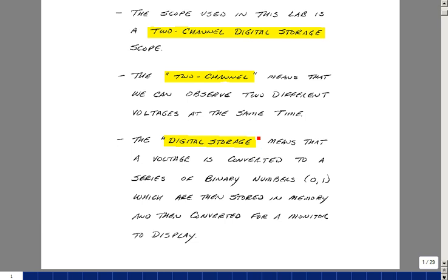Digital storage means that the voltage that is measured is converted to a series of binary numbers, which are then stored in memory and then converted for a monitor display.